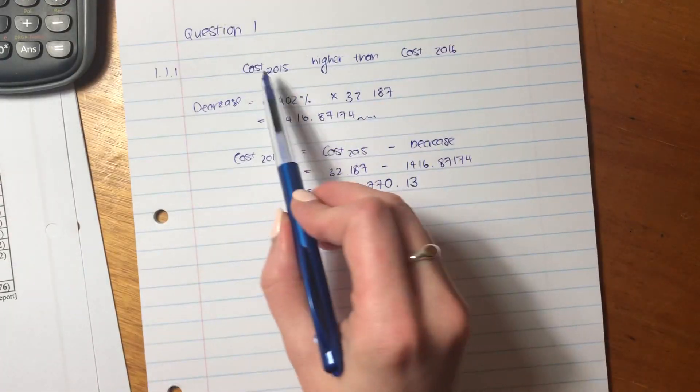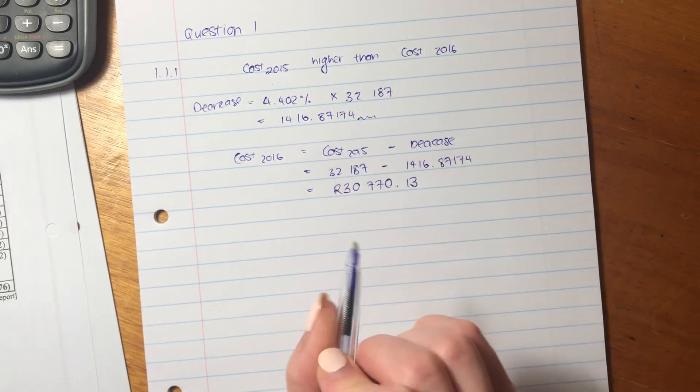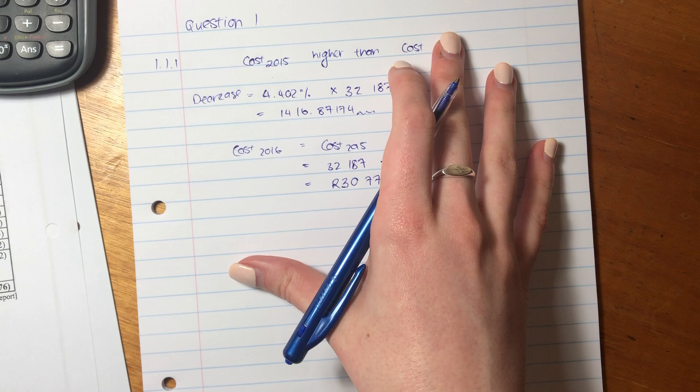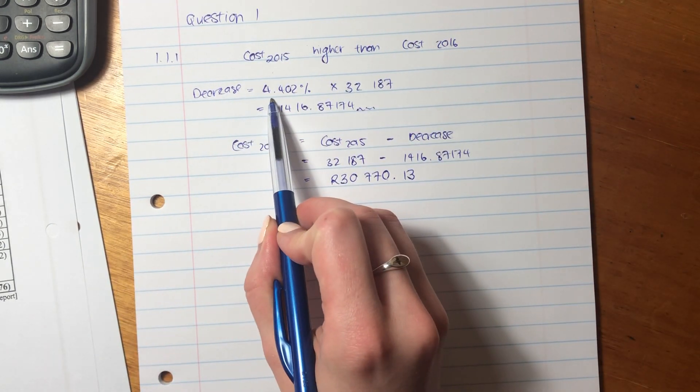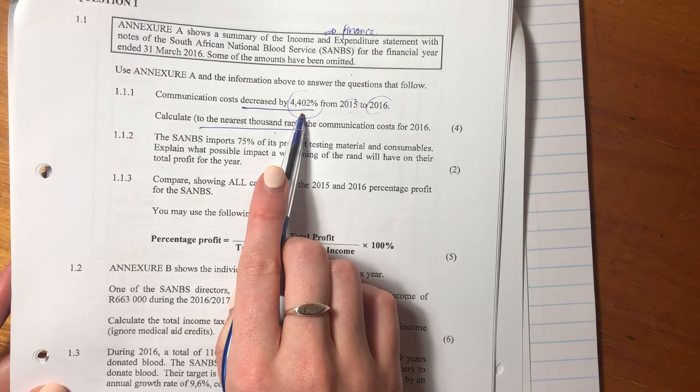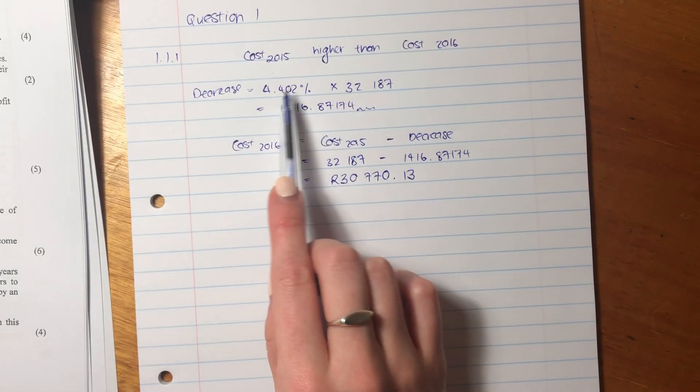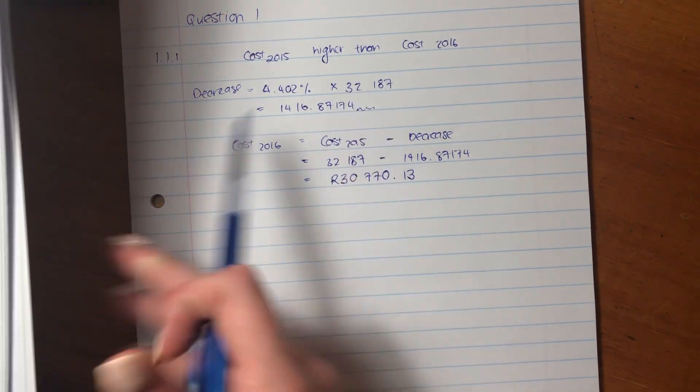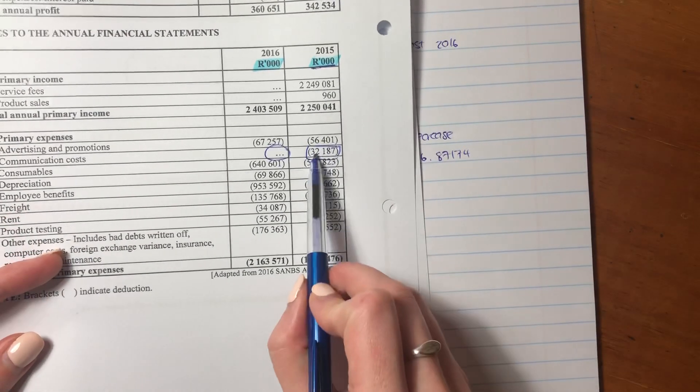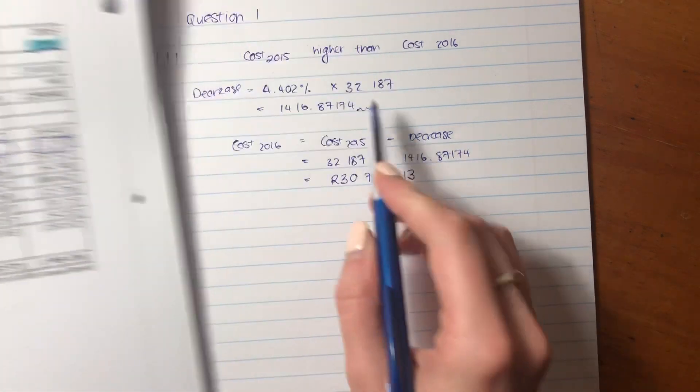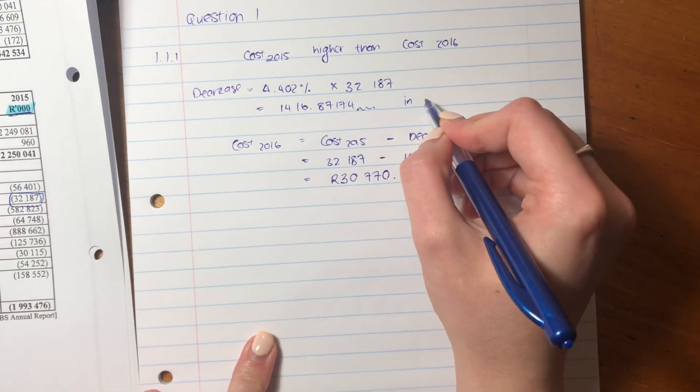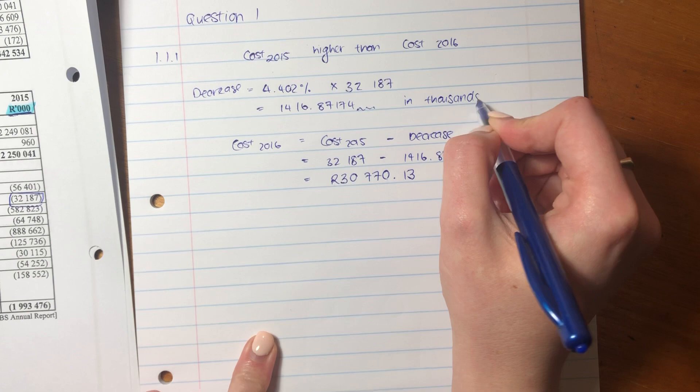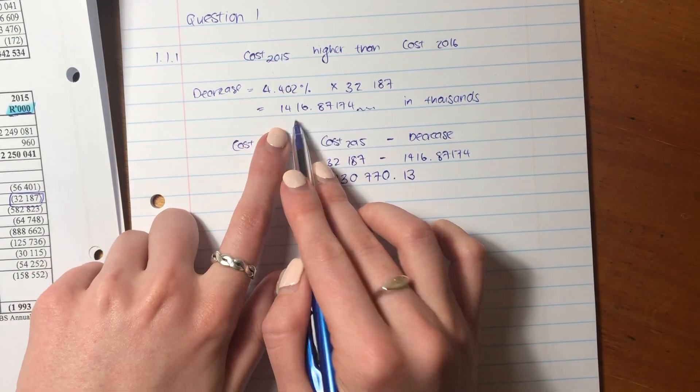So what I've done over here is I've said, well, the cost in 2015 is higher than the cost in 2016. So you should be expecting a lower number in 2016 than you got in 2015. So I said the decrease between the two is the 4.402%. Now, you might be saying, where did you get that? Well, it says it over here, 4.402%. So this is the decrease times by the amount in 2015. Now, you would probably see that I've just used the 32,187. So I haven't put the thousands in over here. But my answer here is in thousands. So this is in thousands. That's my decrease. Put that into your calculator. You should get the same as me.